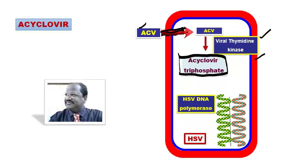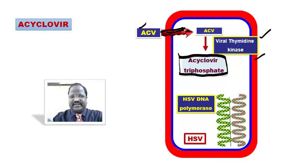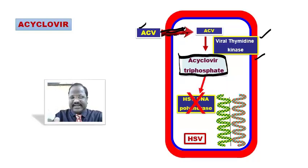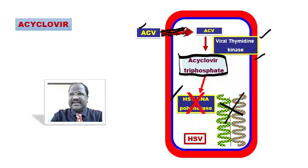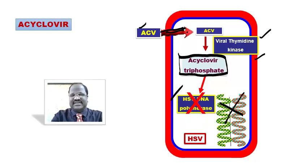Once activated, acyclovir inhibits the herpes simplex DNA polymerase enzyme. By inhibiting this enzyme, it ultimately destroys the DNA. So acyclovir ultimately inhibits viral DNA synthesis. That is the mechanism of action.